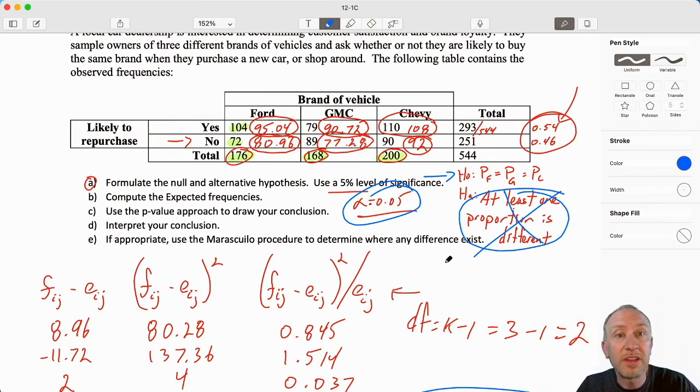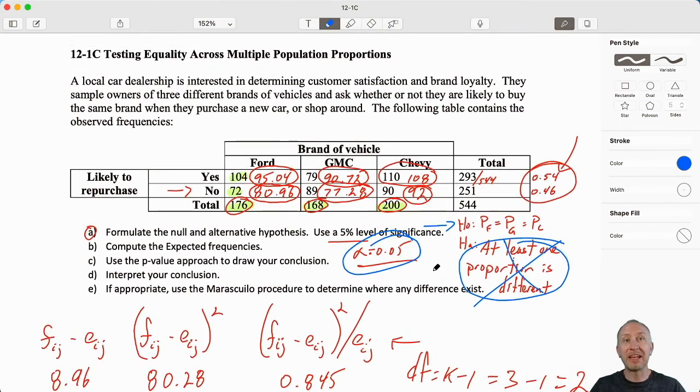Which means, of course, in the context of the problem, that we're unable to show that the proportion of vehicle owners changes the proportion of vehicle owners who are likely to repurchase the same vehicle. It's no different. Whether you own a Ford, a GMC, or a Chevy, we have no reason to show that there's any difference in brand loyalty across those three different brands.